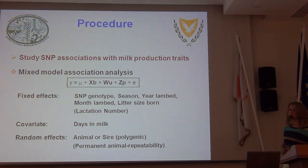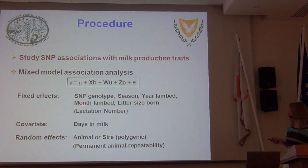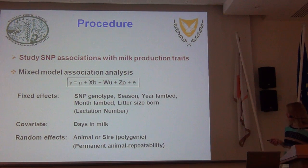This slide shows the mixed model equation employed. In this equation there are vectors and a matrix of fixed effects, and some matrices of random effects. Within the fixed effects, we include the SNP genotype — which is the one we want to estimate — along with other effects such as the season of lambing, the year of lambing, month of lambing, litter size form, and lactation number in cases when we have analyzed data for multiple lactations. We also fit a covariate for the days in milk for each record.